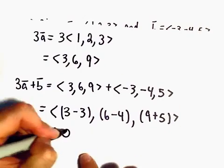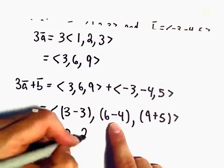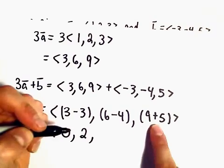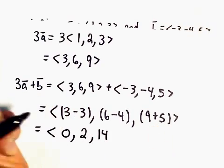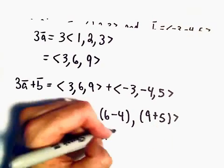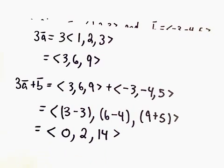Well, 3 minus 3 is just 0, 6 minus 4 is going to be 2, and then 9 plus 5, that's going to be 14. And now we've figured out the component form for our vector 3A plus B.